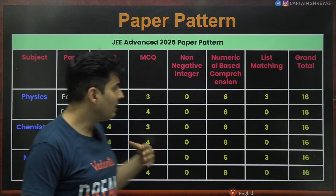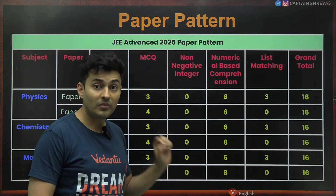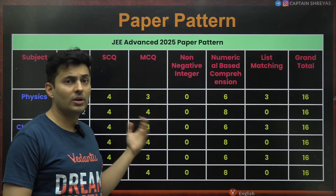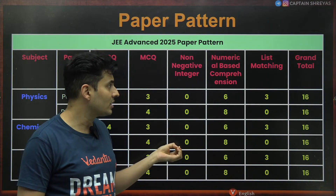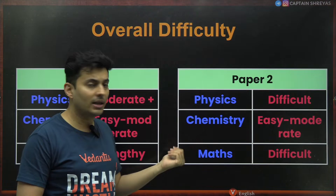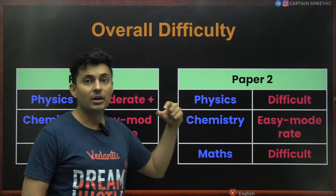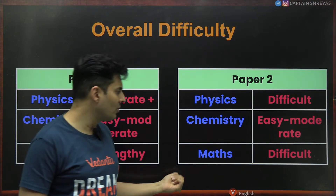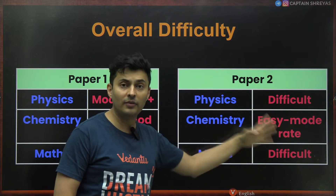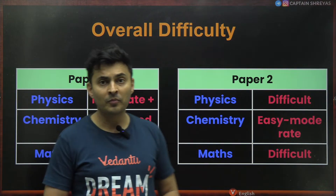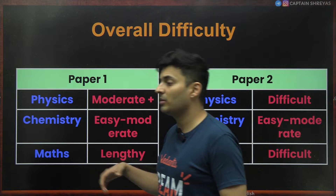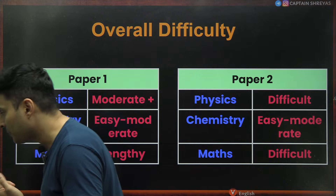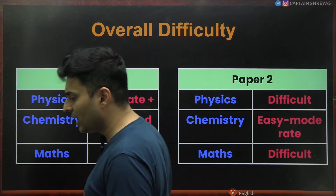Paper 2 had many numeric-based decimal value questions. Paper 1 had lots of single choice, multiple choice, and match the following type questions, so switching immediately to numeric type questions added to the difficulty. Chemistry maintained the same easy-to-moderate level, but Maths proved to be a difficult nut to crack in Paper 2 — it was not only lengthy but also harder to solve.